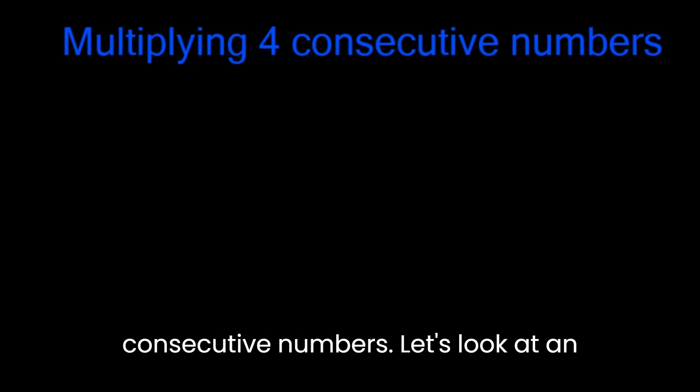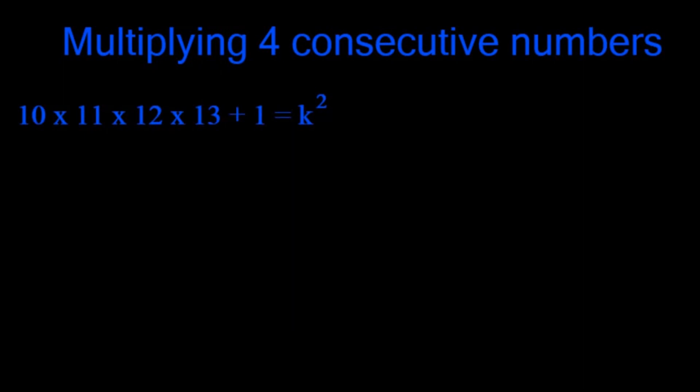Let's talk about multiplying four consecutive numbers. Let's look at an example. To find k, what we're going to do is multiply the first and last numbers together.